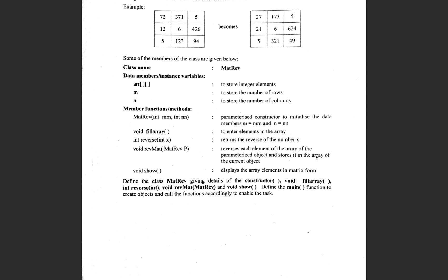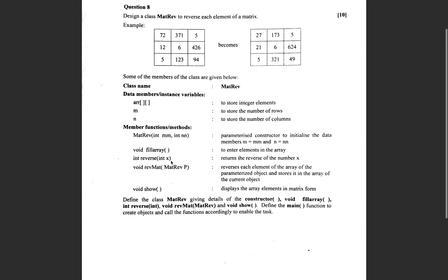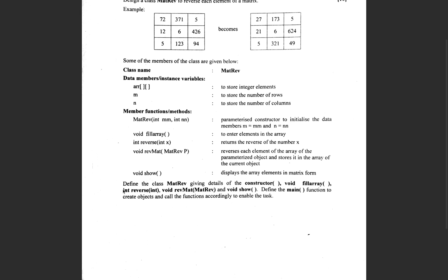The revMat method takes a parameter of the same class as the current object, reverses each element of the array of the parameterized object, and stores it in the array of the current object. The task is to define the class with the constructor, void fillArray, int reverseX, void revMat, and void show, then define the main function to create two objects and call the functions accordingly.